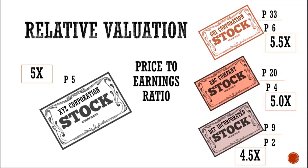After doing this, we average these figures to arrive at the industry P/E ratio — approximately 5 times. If there are differences between XYZ Corporation and the average company in the industry, we can make adjustments by adding or subtracting from this figure. If there are none, we use this ratio of 5x to work back on the stock value. If XYZ's earnings per share is 5 pesos, the stock value working back using the P/E ratio should be 25 pesos.